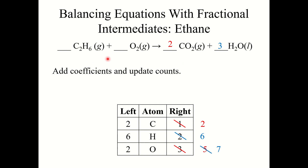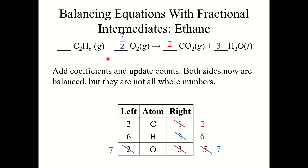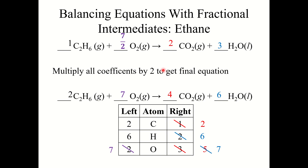What you need to do to get this to balance is first place a seven-halves coefficient in front of O2. If you place a seven-halves coefficient, you get seven oxygen atoms on the left side. Now both sides are balanced, but they are not all whole numbers. So we need to multiply all coefficients by two to get our final equation: 2C2H6, 7O2, 4CO2, and 6H2O.